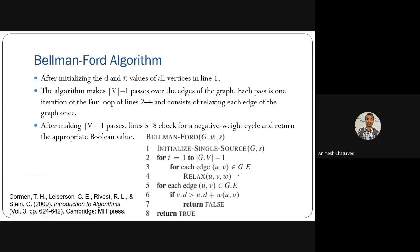In each pass, from line two to four, we perform the relaxation step as discussed previously. After that, there is a for loop for negative weight cycle detection.